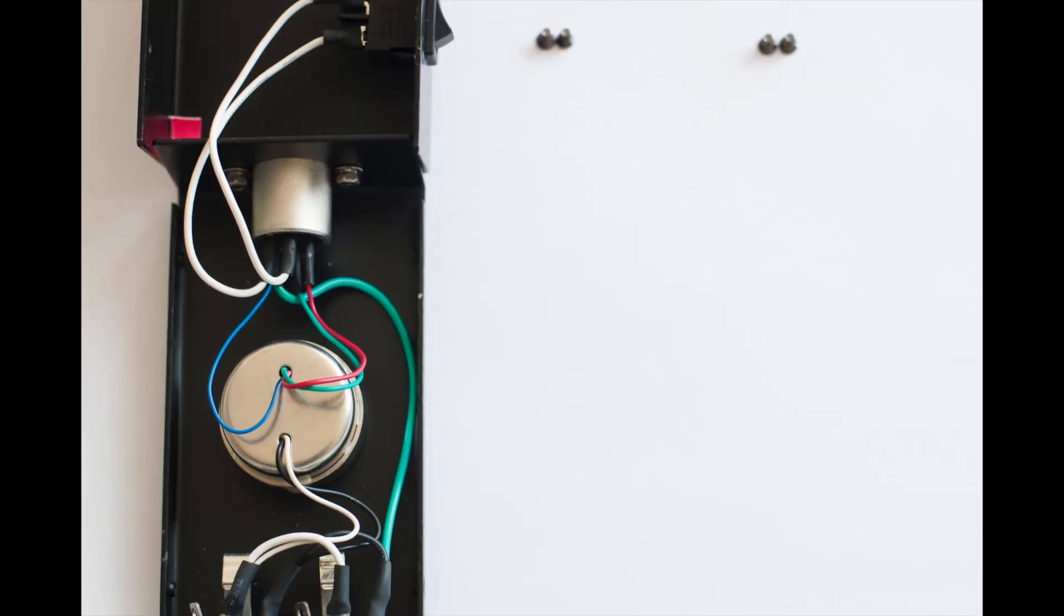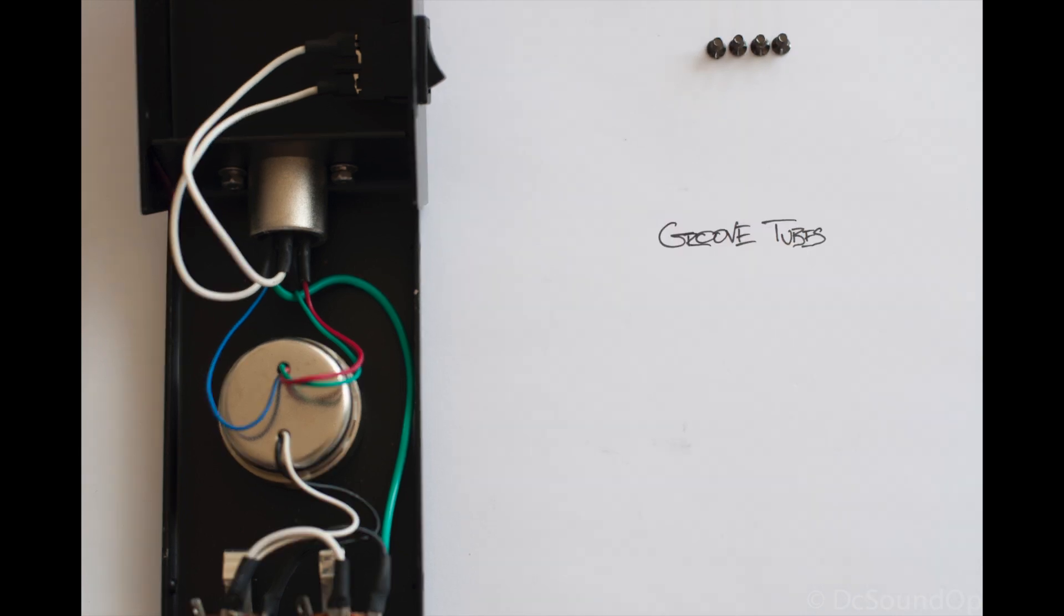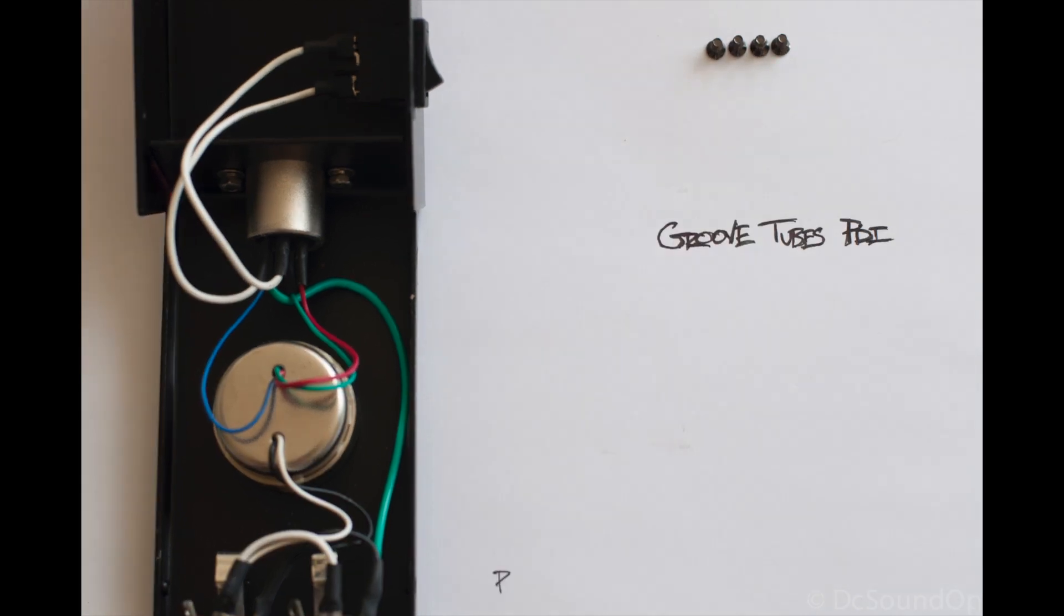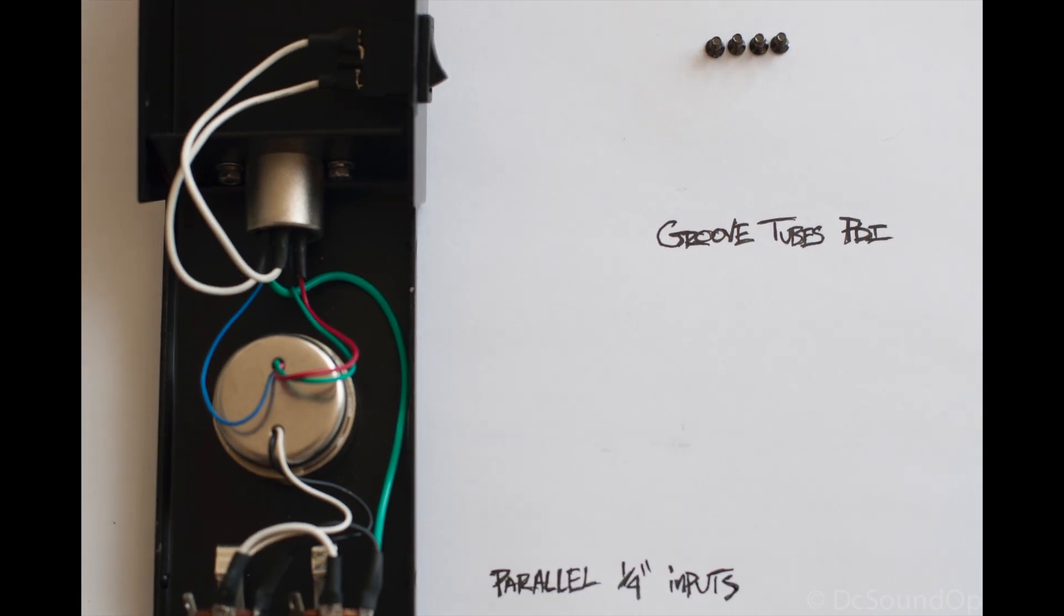So we're going to pop open the Groovetube box here and take a look at a basic direct box from the inside. At the bottom here, you've got a pair of quarter inch inputs. Those are wired in parallel. You can see the white and black wires tying across.